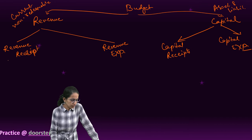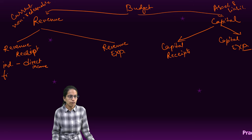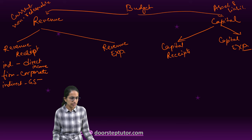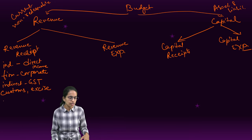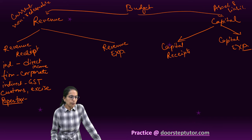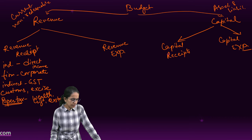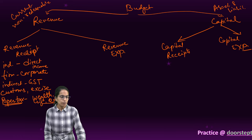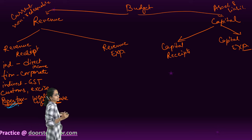Revenue receipts include all kinds of taxes. For an individual it would be direct income tax; for a firm, corporate tax. There can be indirect taxes like GST, customs tax on imported goods, and excise tax on goods produced within the country. There is also a term called paper tax, which refers to wealth tax, gift tax, and estate tax. These never contribute a huge proportion of revenue — they are there but do not significantly affect the system, hence the name paper tax.